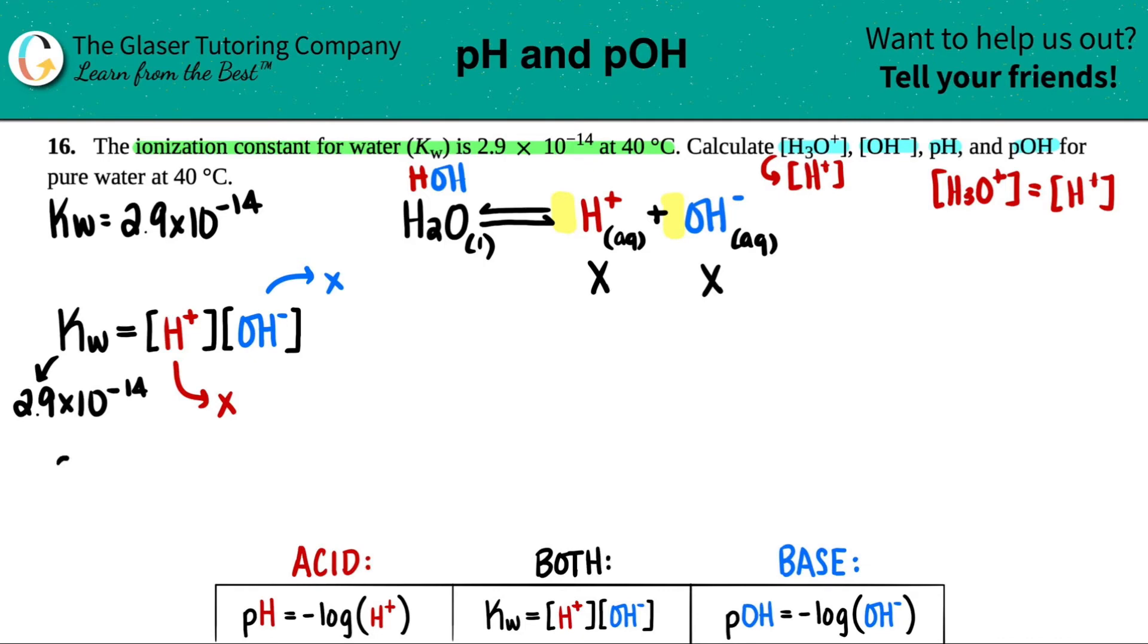The Kw they told us was 2.9 × 10^-14. The H we're going to label as x and the OH we're going to label as x as well because they have the same ratio. So 2.9 × 10^-14 equals x times x. Remember x times x is just x². And what do you do to get rid of that squared? You got to take the square root.